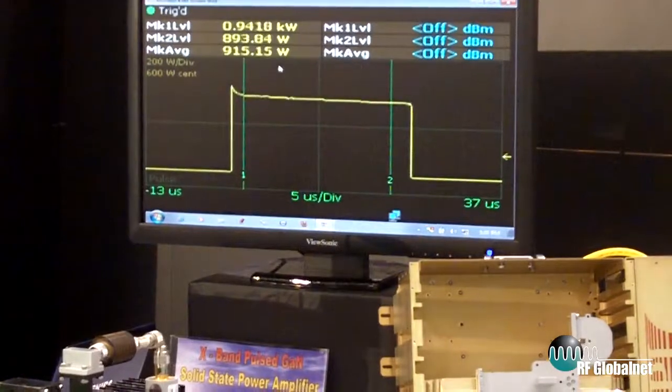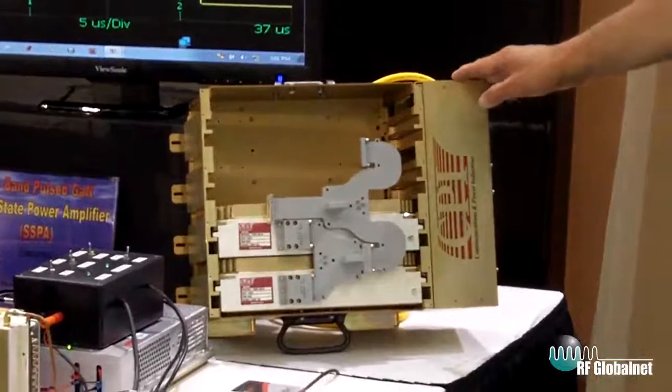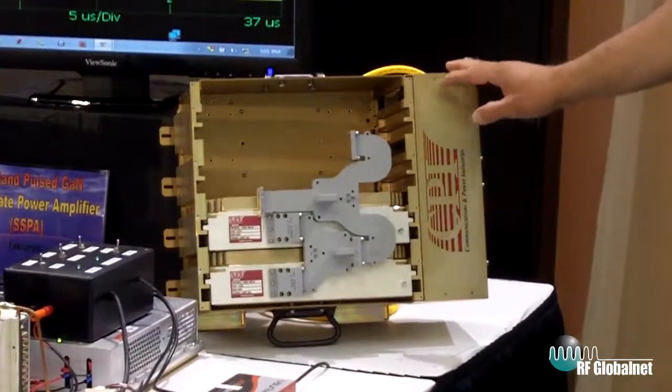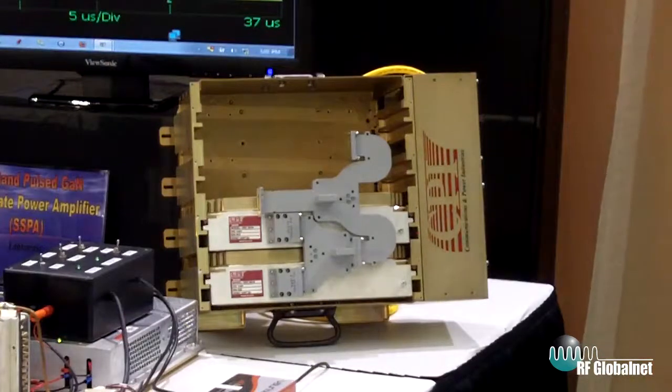The unit is designed to be rack mounted and combined to produce an output power of 3.5 kilowatts with an efficient waveguide output combiner.